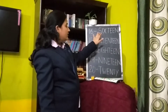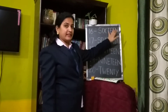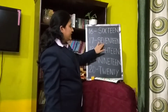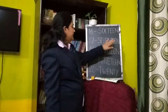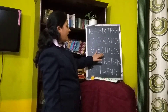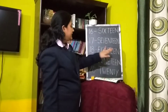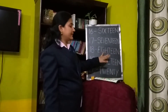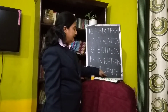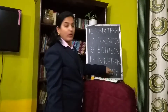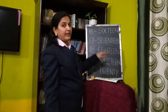Let's revise it once again. S-I-X, 6, T-E-E-N — 16. S-E-V-E-N, 7, T-E-E-N — 17. E-I-G-H-T, 8, T-E-E-N — 18. N-I-N-E, 9, T-E-E-N — 19. T-W-E-N-T-Y — 20.